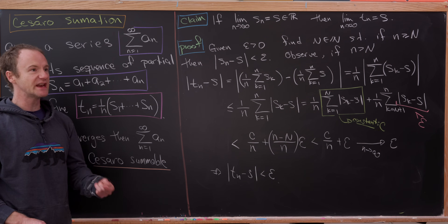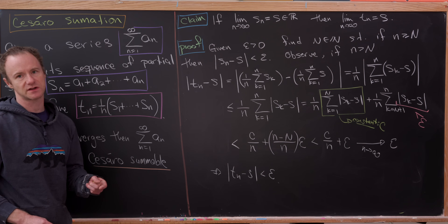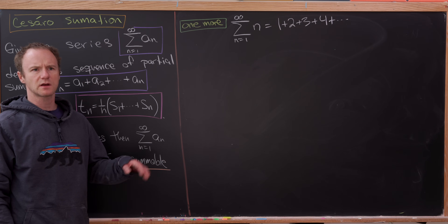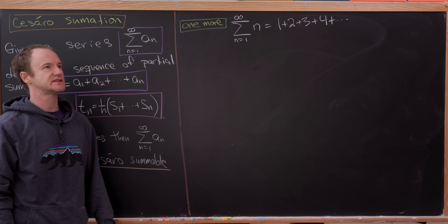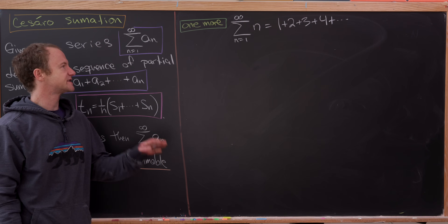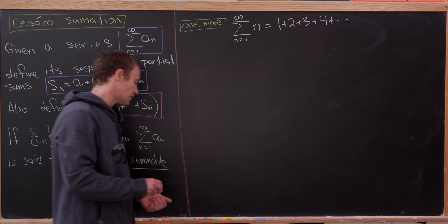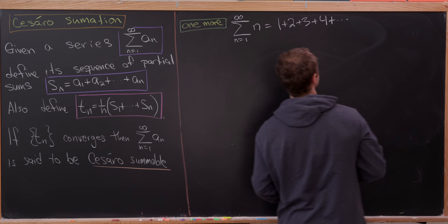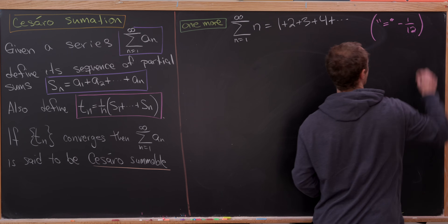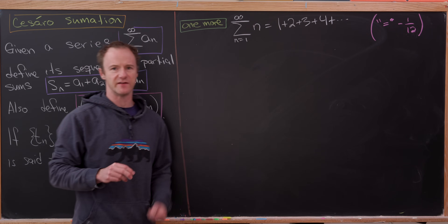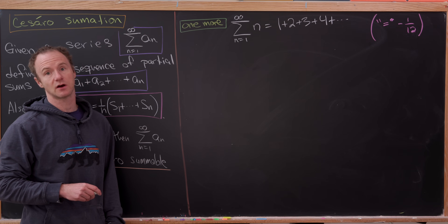Let's finish by checking if Cesàro summation will reproduce the famous result about the sum of the natural numbers. We have the sum as N goes from 1 to infinity of N — that is, 1 + 2 + 3 + 4 + 5, and so on. As famously done on the internet many times, this should equal −1/12 if we find some way of making sense of this obviously divergent series. Let's see what we get with Cesàro summation.